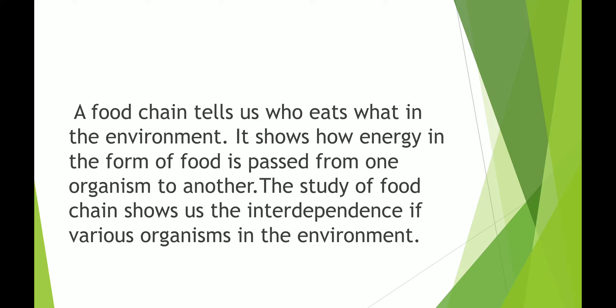A food chain shows how energy in the form of food is passed from one organism to another. The sun is the primary source of energy. Green plants trap the sun's energy to make their food. When a grasshopper eats grass, the sun's energy is transferred to the grasshopper. When the grasshopper is eaten by the blue bird, the energy moves on to the blue bird. Then some energy is transferred to the snake, and then from snake to owl, and the owl gets decomposed. So you can see that all are interdependent on each other.